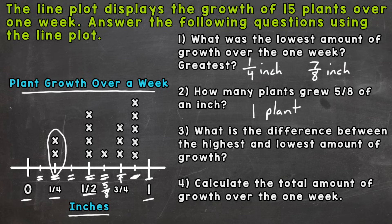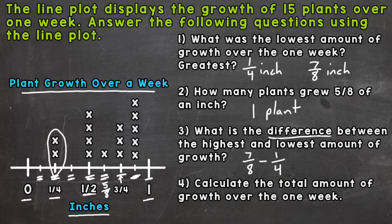Number three: what is the difference between the highest and lowest amount of growth? The highest amount of growth was seven eighths of an inch, and the lowest amount of growth was one fourth of an inch. To find the difference, we need to subtract seven eighths minus one fourth. Thinking back to subtracting fractions, we need a common denominator, and the common denominator for eight and four is eight.